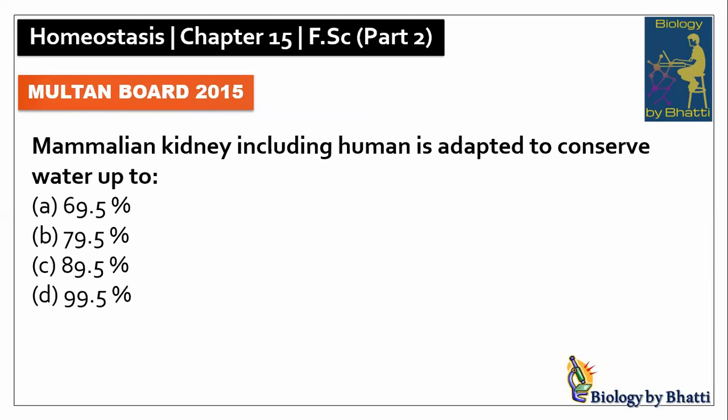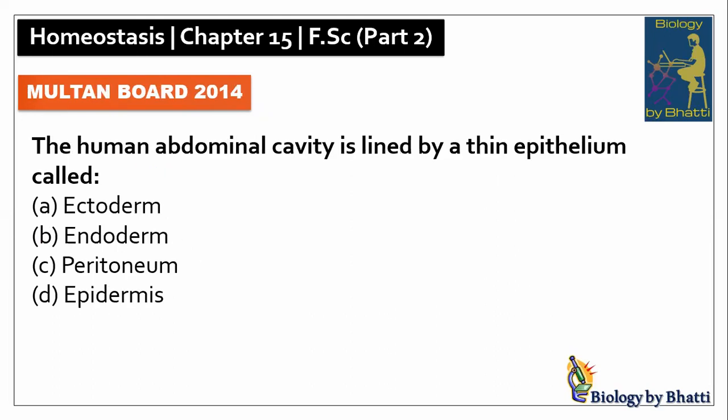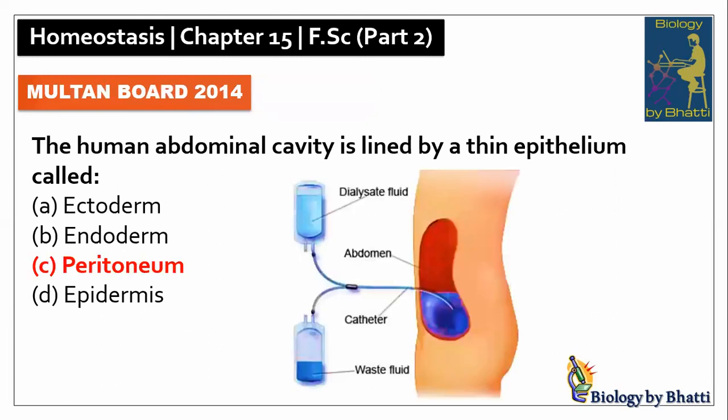Multan Board 2015: mammalian kidneys including human kidneys are adapted to conserve water up to 99.5%, the answer was D option. In this paper, fresh water protozoans pump out excess water by contractile vacuoles, so the answer was A option. Multan Board 2014: the human abdominal cavity is lined by a thin epithelium called peritoneum, the answer was C option.